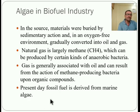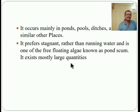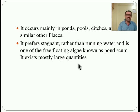Present-day fossil fuel is derived from marine algae. This important fuel form occurs mainly in ponds, pools, beaches, and similar places. It prefers stagnant rather than running water and is one of the free-floating algae known as pond scum, existing in large quantities. In this way, different types of algae are directly or indirectly used in the biofuel industry, in the form of oil or gas.